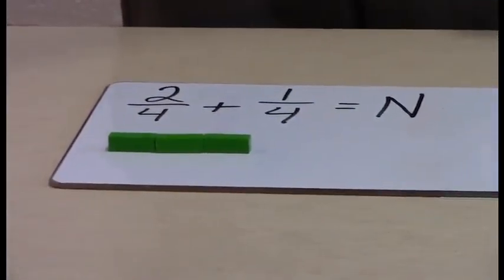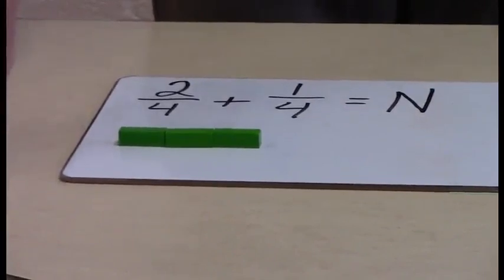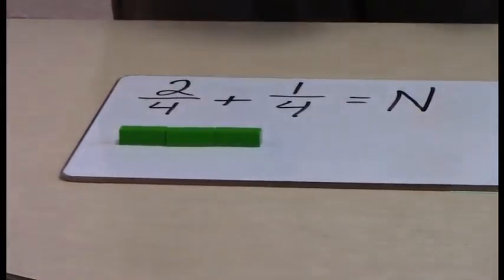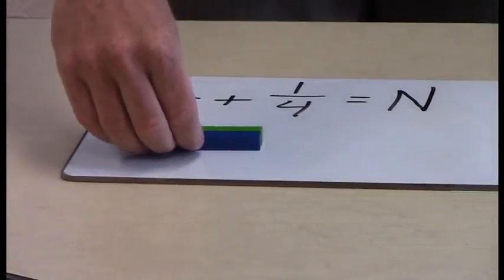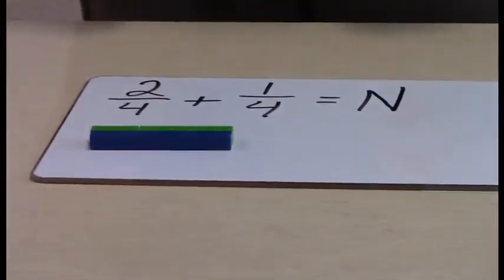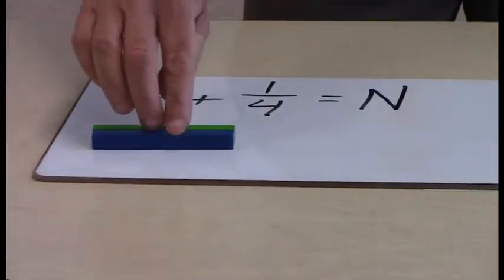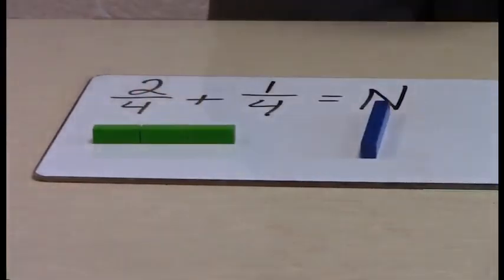But what I asked the students to do then is to find that one rod color that would be equivalent to the three greens. At this point it's a blue. Now the reason why we want to do that is because n is equal to one blue. It's equal to one number.